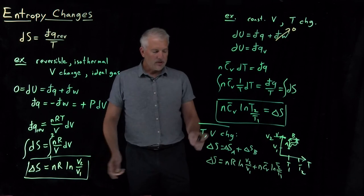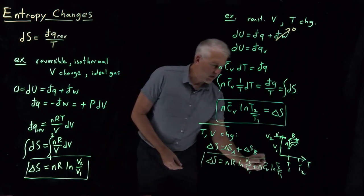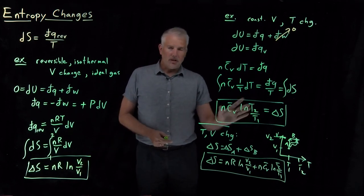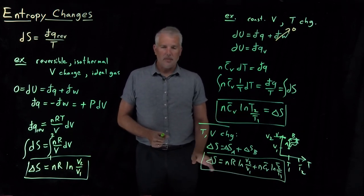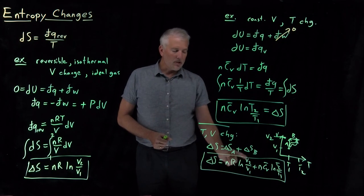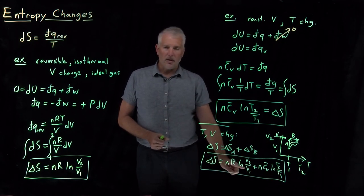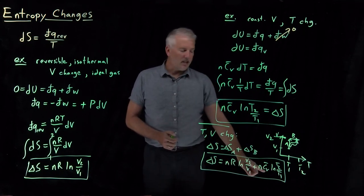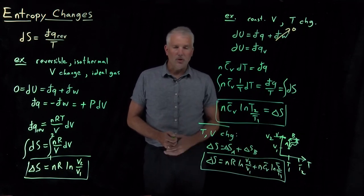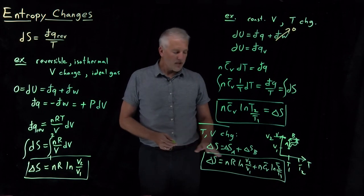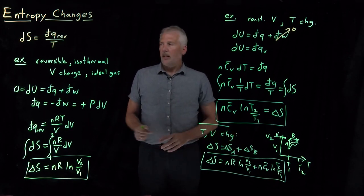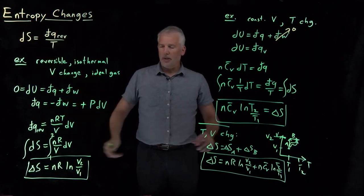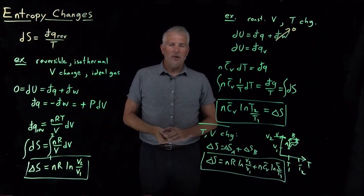These two boxed equations are actually a little overly restrictive. It doesn't matter whether I'm changing just the volume, just the temperature, or both simultaneously. The contribution from the volume change is nR log(V2/V1), and the contribution from the temperature change is n times the heat capacity times log(T2/T1). This tells us how to use prior knowledge about heat to determine the entropy change for these processes.